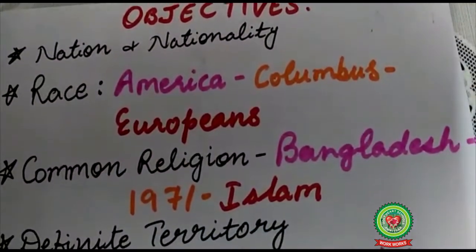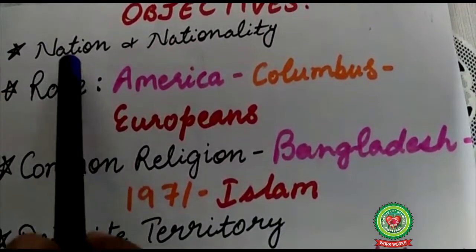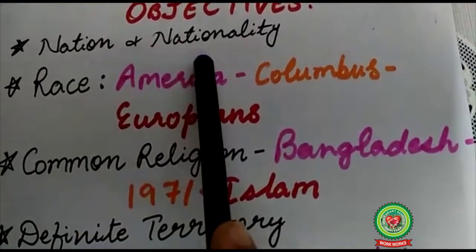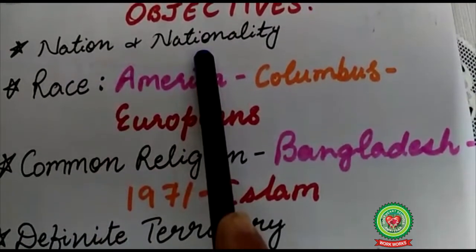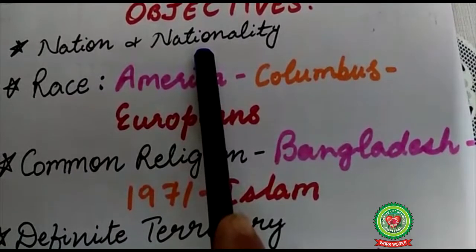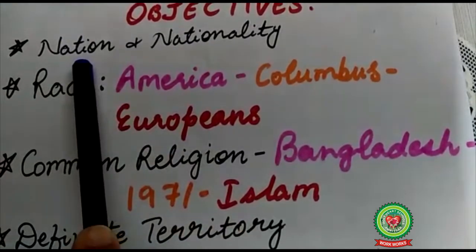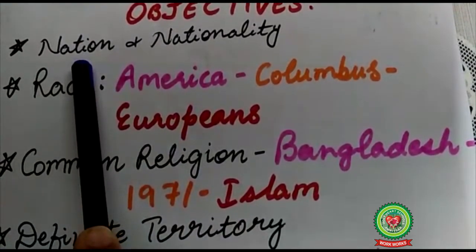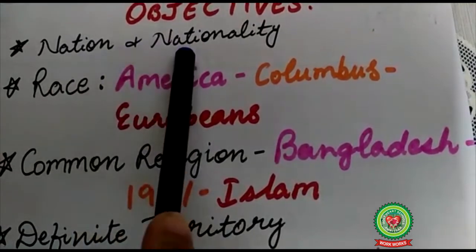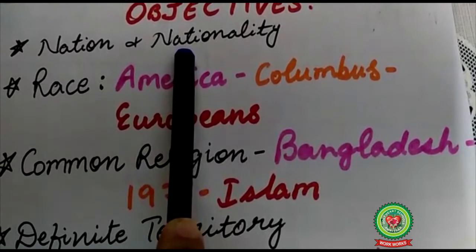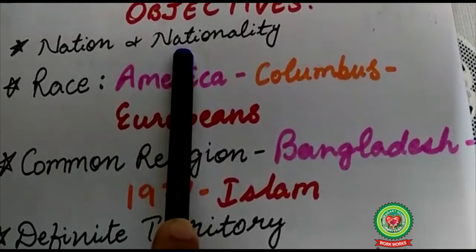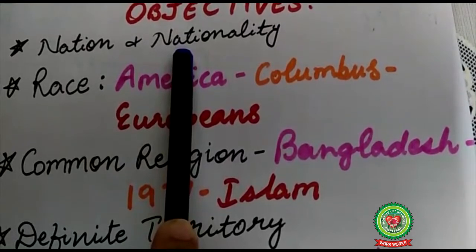Now I will discuss today's topic: nation and nationality. Last time I discussed state, society, and association. Today I will talk about nation and nationality. Students, you tell me in which country do you live — it's very simple to answer, that is India. And if I ask you what's your nationality, obviously you will answer that is Indian. So nation name is nothing but your country's name.